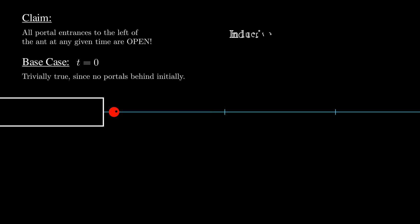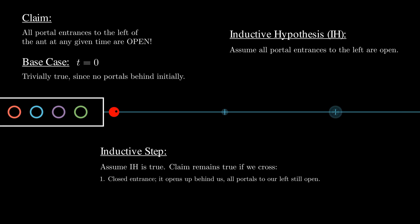Let's assume that all of the portals behind us are open. If we cross a closed portal, it opens up behind us, and the property is still true. Everything behind us is still open.